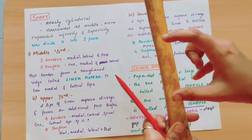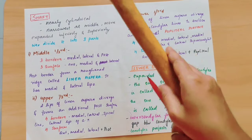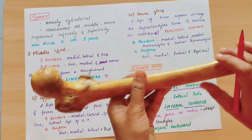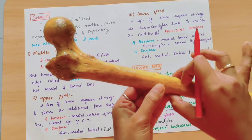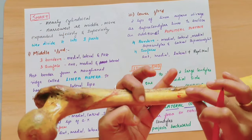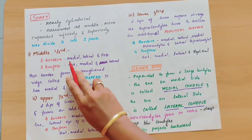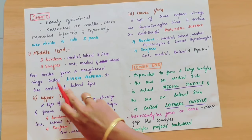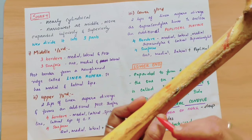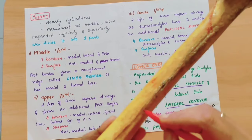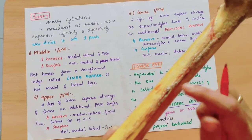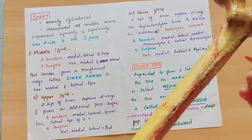In the middle one third, there are 3 borders — medial, lateral, and posterior — and 3 surfaces — anterior, medial, and lateral. The posterior border forms a rough ridge called the linea aspera, which has two parts: the medial lip and the lateral lip. In the upper one third the shaft is more square-shaped with 4 borders and 4 surfaces, and in the middle one third it is triangular. The posterior border in the upper third is called the linea aspera.